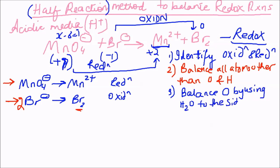The third step is to balance oxygen by adding water molecules to the side that needs it. In the oxidation half there is no oxygen involved, so we're fine there. In the reduction half, I have four oxygens on the left and none on the right, so I add four H2O molecules to the right-hand side.